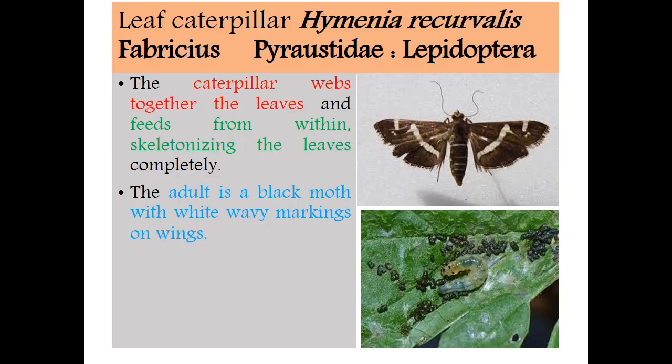Next one is Leaf Caterpillar, Hymenia recurvalis, Family Pyralidae, Order Lepidoptera. Here the caterpillar weaves together the leaves and feeds from within, causing skeletonizing of leaves completely. The adult is a black moth with white wavy markings on the wings. See the adult and larvae — transparent larvae with fecal matter on Amaranthus leaves.